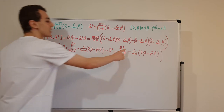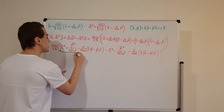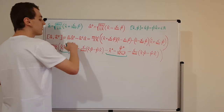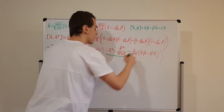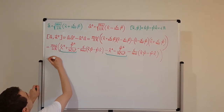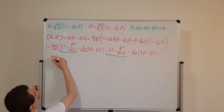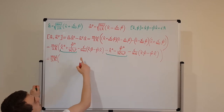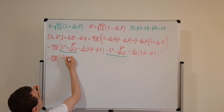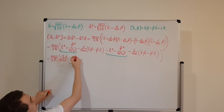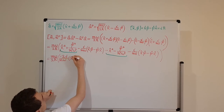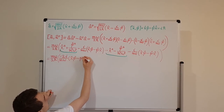The x squared and p squared terms cancel completely. We have two copies of the mixed term, and collecting them together with the constant out front gives us m omega over 2 h bar times minus 2i over m omega times (x hat p hat minus p hat x hat).